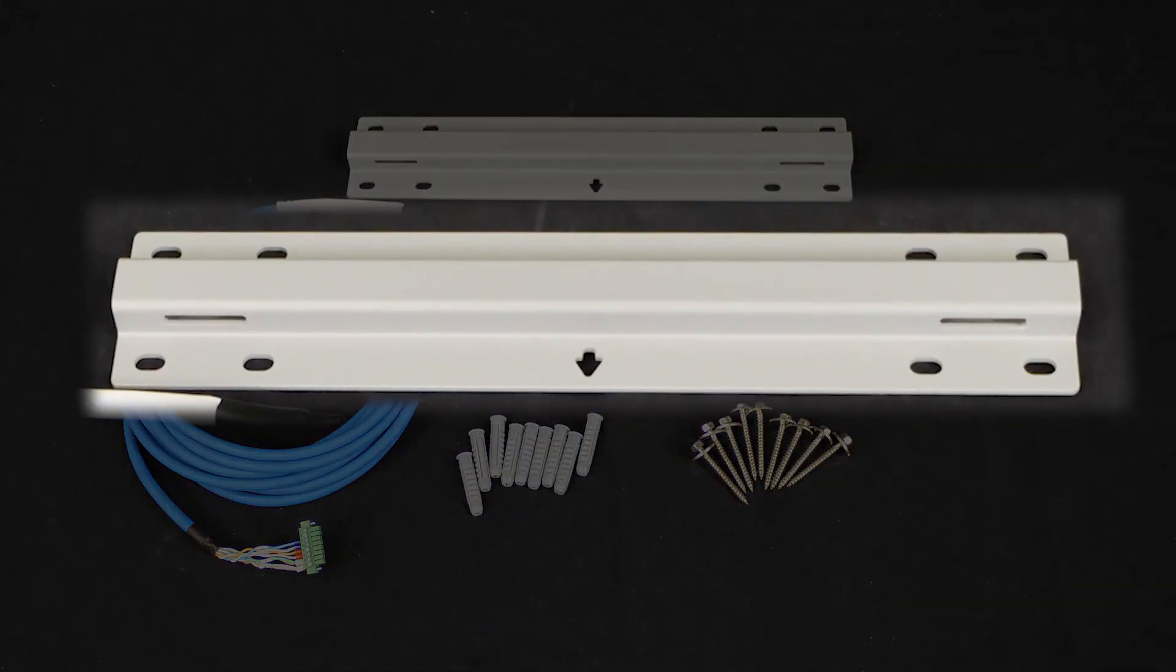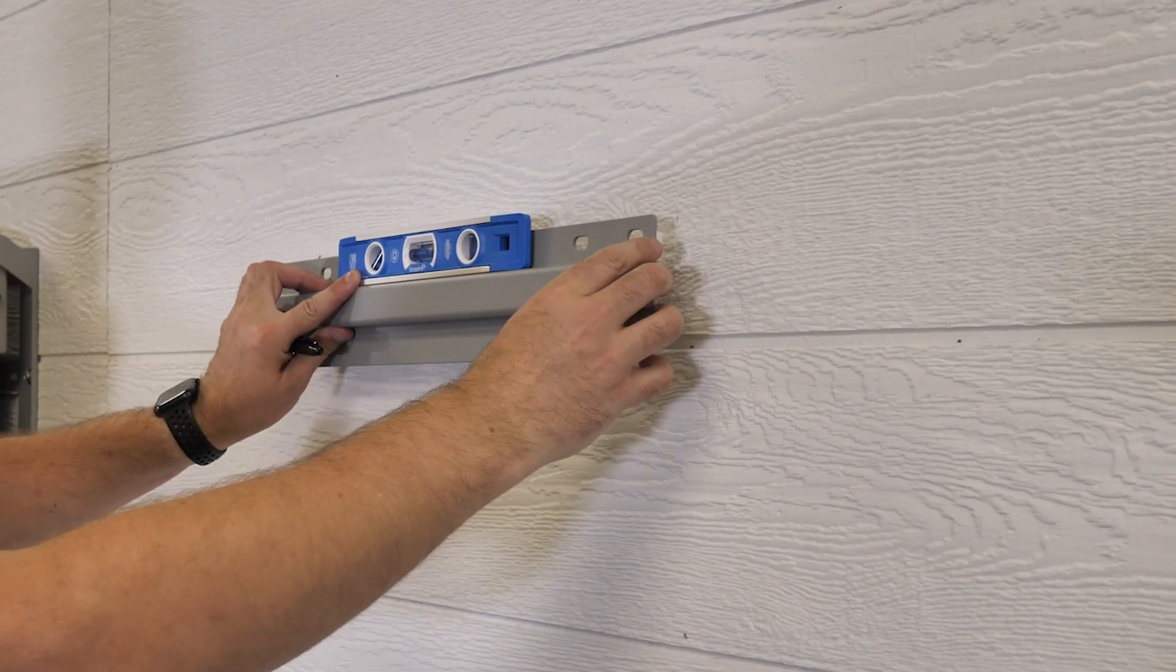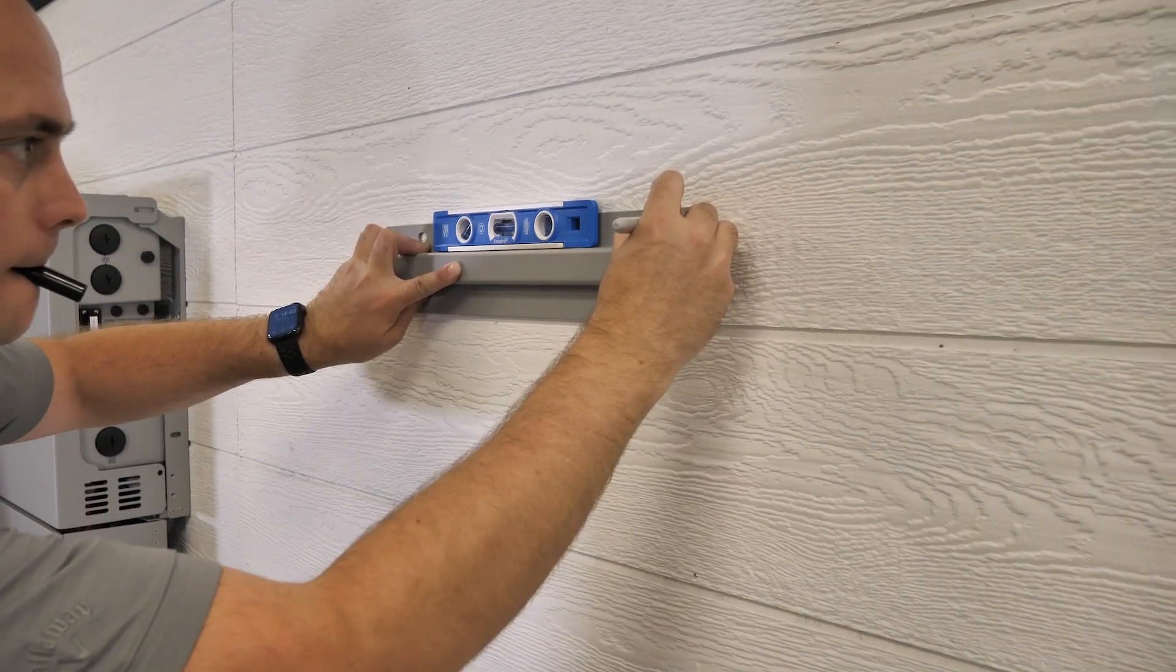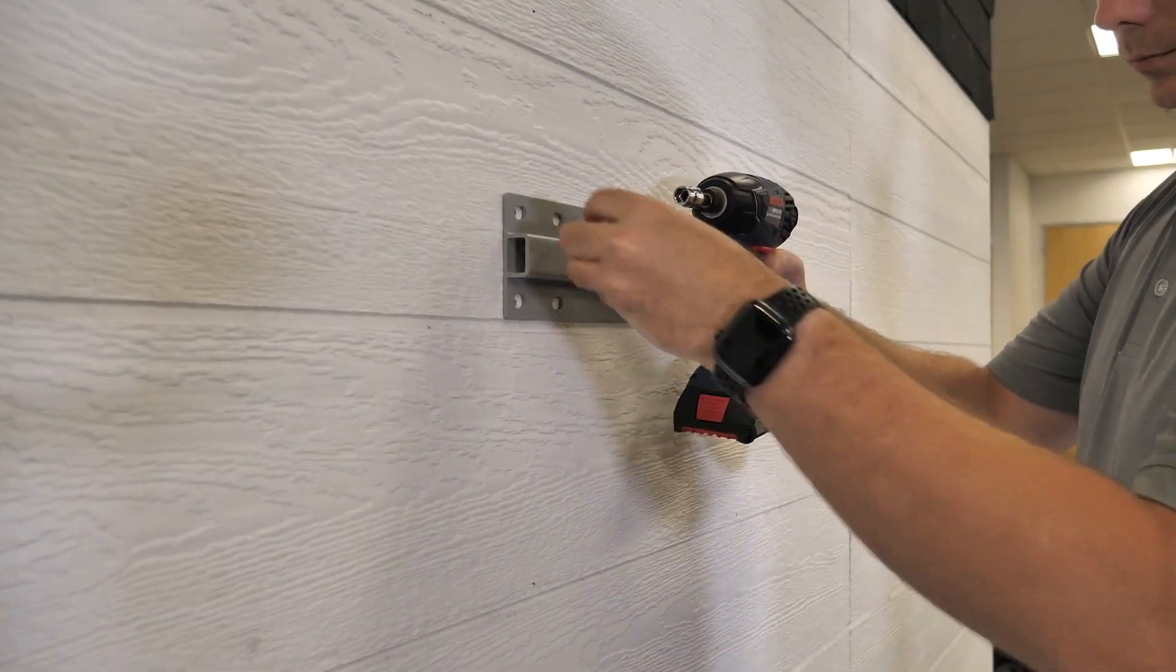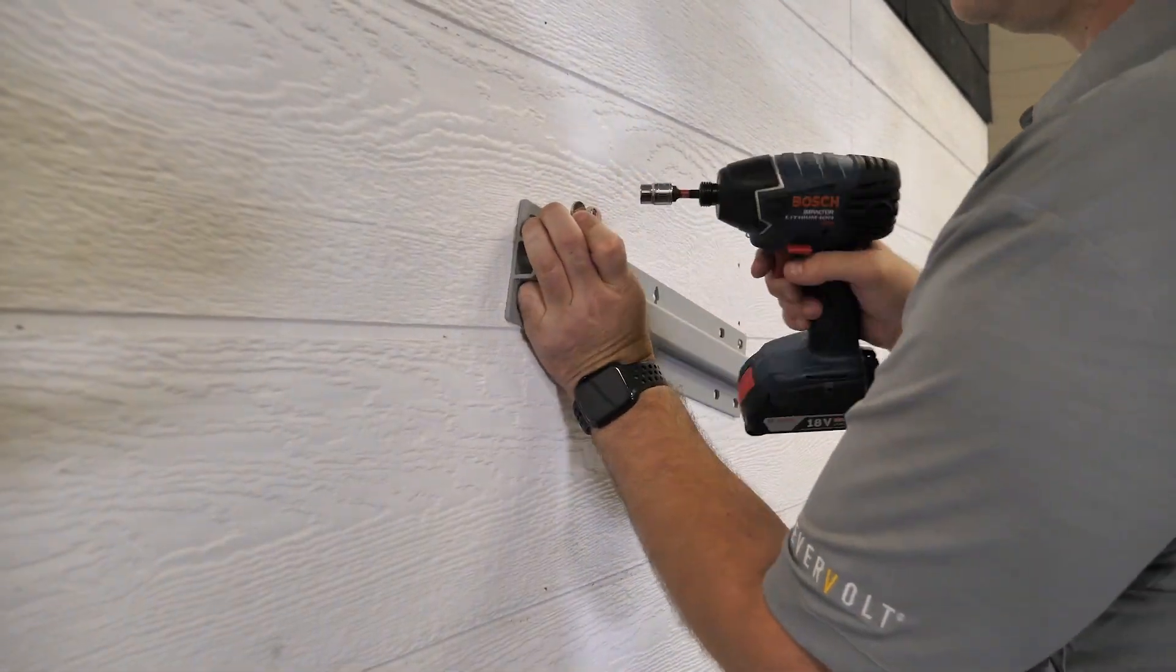Locate your smart box mounting bracket. Place the bracket on the wall between your two 16 inch studs, make sure it's level. Mark your holes and drill pilots. Fasten the mounting bracket with the included lag bolts.